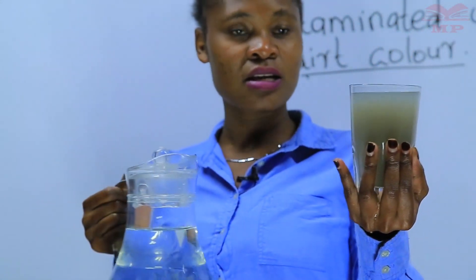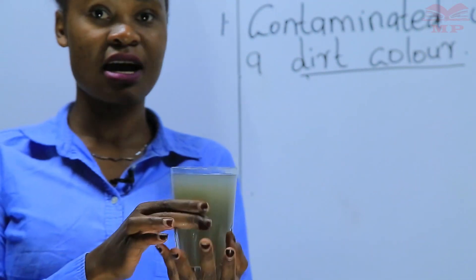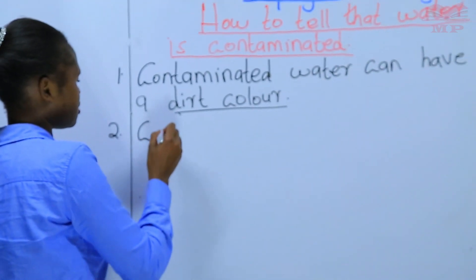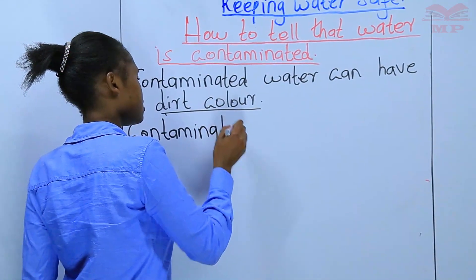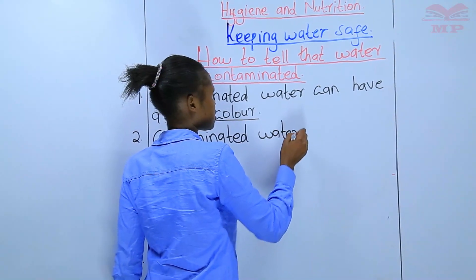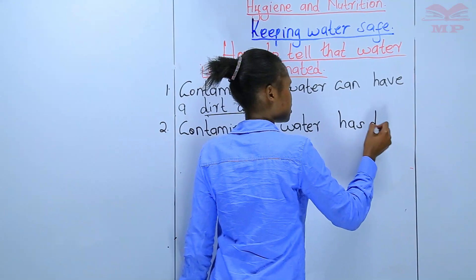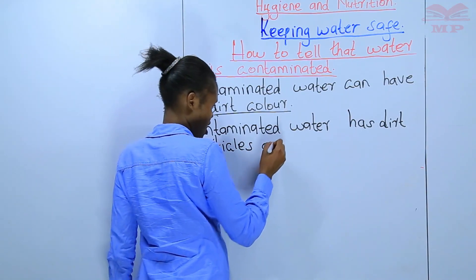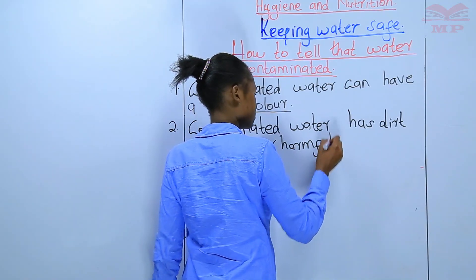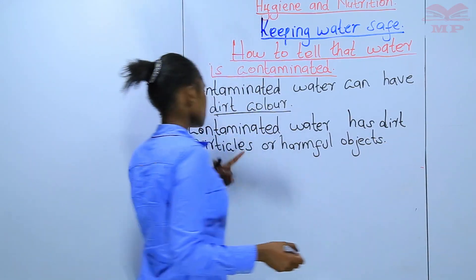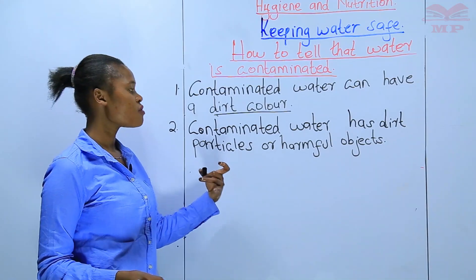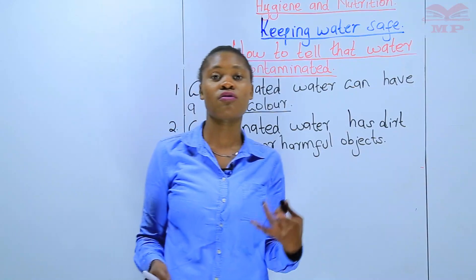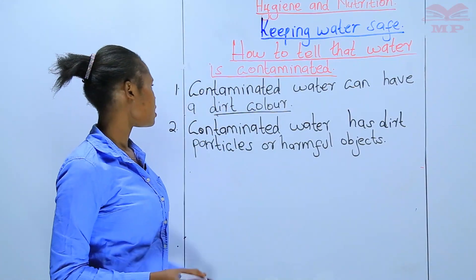Contaminated water has dirt particles or harmful objects. You can go to fetch water from a container but see that the water has some particles or harmful objects — it means that water is not safe for you to drink or use. It is contaminated.